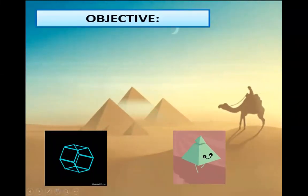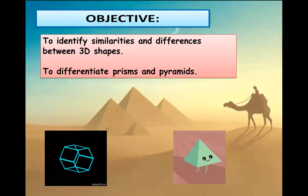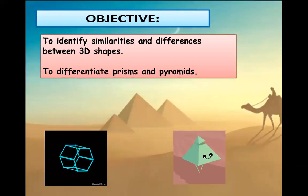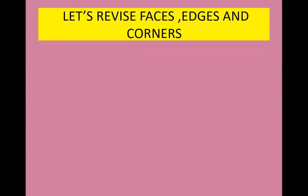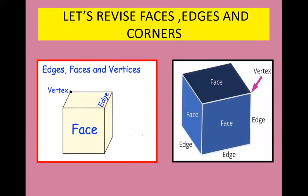Today's lesson objective is to identify similarities and differences between 3D shapes, and to differentiate prisms and pyramids. Let's revise faces, edges and corners. The flat surfaces around the object are its faces, the meeting line of faces are the edges, and the corner where the edges meet is called the vertex.